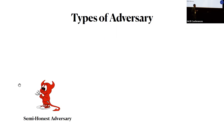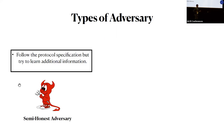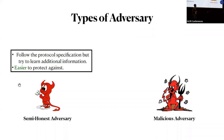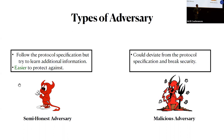There are two types of adversaries in the cryptographic literature. The first is the semi-honest adversary, where corrupted parties follow the protocol specification but try to learn additional information by examining the transcript. Semi-honest adversaries are easier to protect against and protocols secure against them are much more efficient. The stronger model is the malicious adversary, where corrupted parties could deviate arbitrarily from the protocol specification. Malicious adversaries are harder to protect against, and protocols secure against them tend to use sophisticated cryptographic tools and techniques.